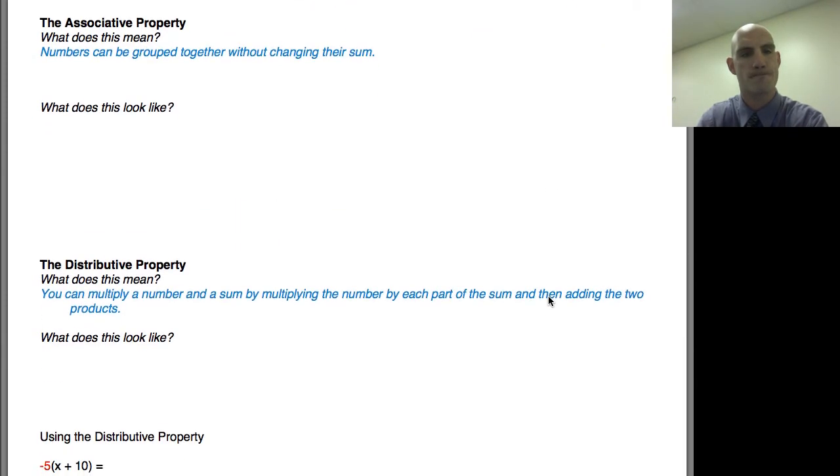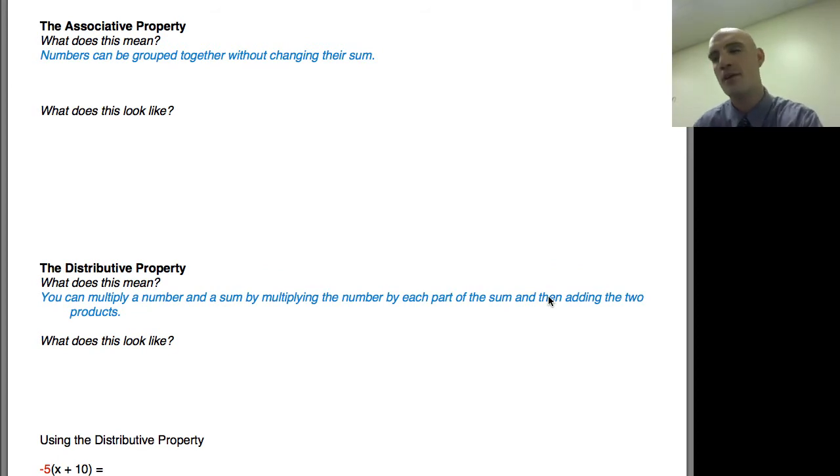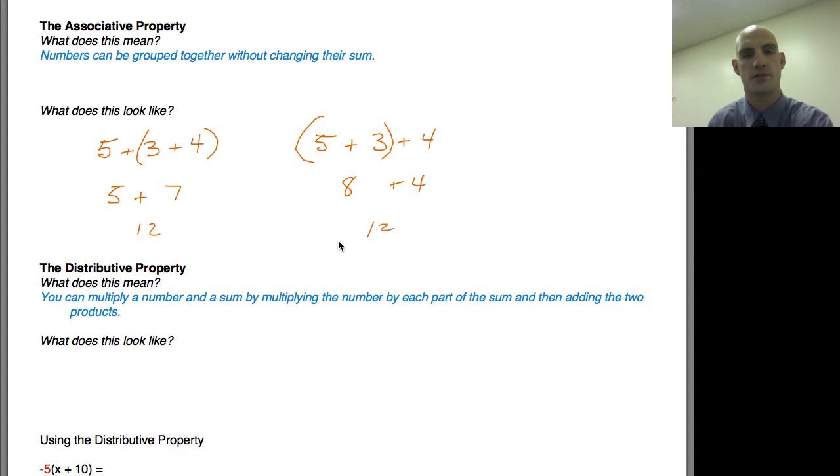Last one. Associative property. Numbers can be grouped together without changing their sum. What does this look like? 5+(3+4) is equal to, I do the parentheses first, 7. So 5+7 is 12. But what if I regrouped them? (5+3)+4. This would be 8+4 equals 12. Changing the groups without changing the sum. They associate together differently. That's all there is to it.